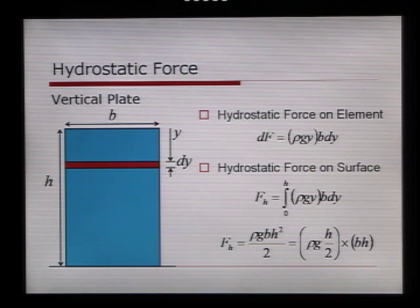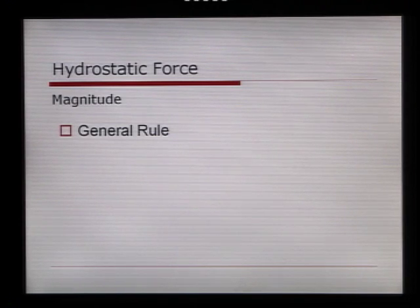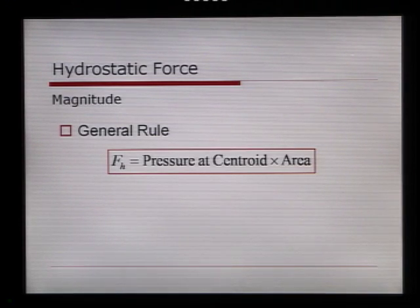This leads us to a general rule which defines the magnitude of the hydrostatic force on a vertical surface. That general rule is that the hydrostatic force is equal to the pressure at the centroid, so the pressure halfway down, ρg(h/2), multiplied by the area of the dam, which is b times h.